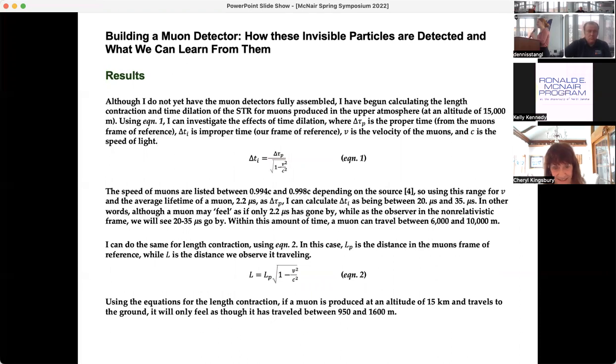The detectors are not yet constructed, but I have been able to do a lot of predictive calculations for the time dilation and length contraction. That first equation up there is the equation for the time dilation. The delta tau sub p stands for the proper time, which is the time that a muon would feel if you were in their frame of reference. Delta t sub i is the improper time, and that's the time that we observe externally from the muon traveling. The v is the velocity of the muons, known to be between 0.994 and 0.998 times the speed of light, so very close to the speed of light. They travel very fast since they have such little mass. And c is just the speed of light, which is about 300 million meters per second.